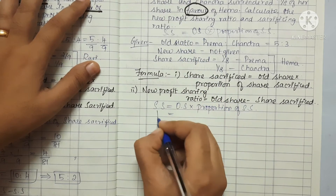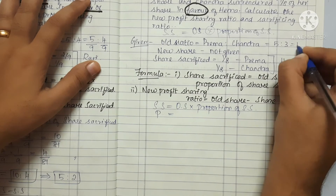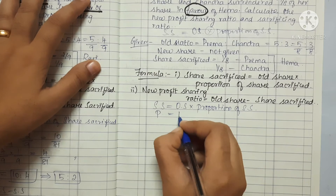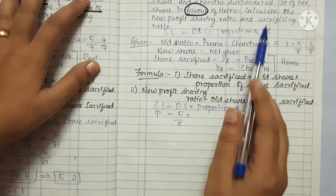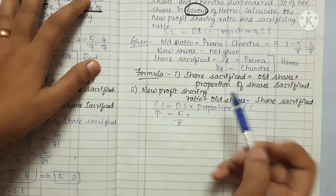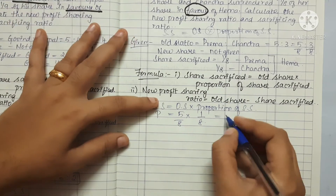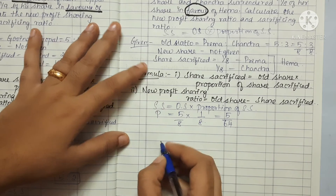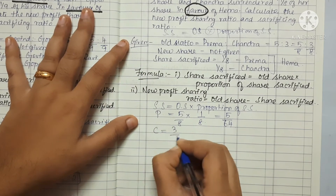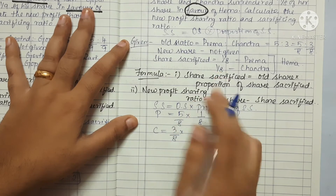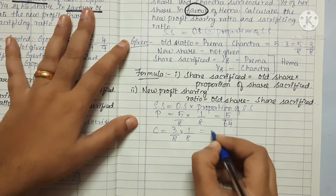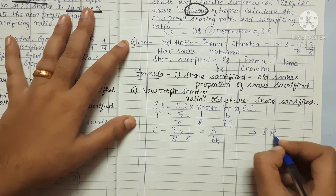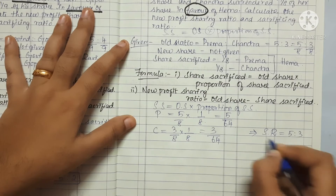The old share is 5 is to 3, so 5 by 8 is to 3 by 8. For Prema: 5 by 8 into 1 by 8 gives 5 by 64. For Chandra: 3 by 8 into 1 by 8 gives 3 by 64. So the sacrificing ratio is 5 by 64 to 3 by 64, which simplifies to 5 is to 3.